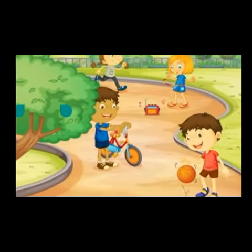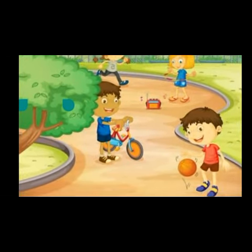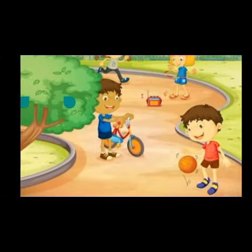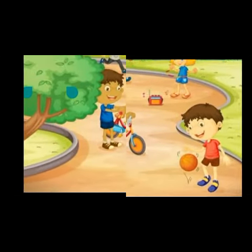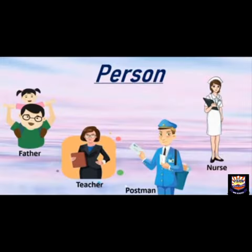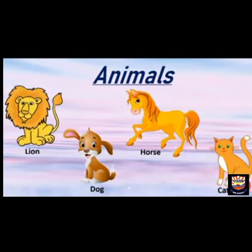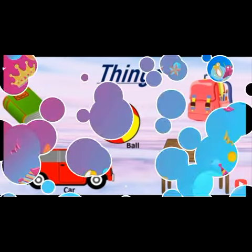Trees, children, ball, and bicycle — all of these things are nouns. Noun is divided into four categories: person, place, animal, and thing.